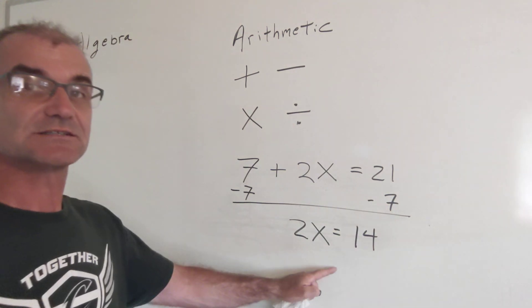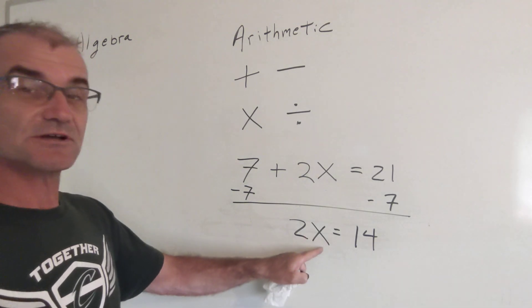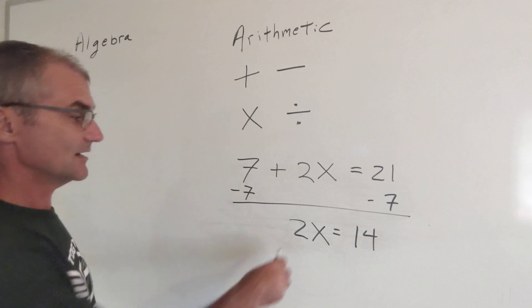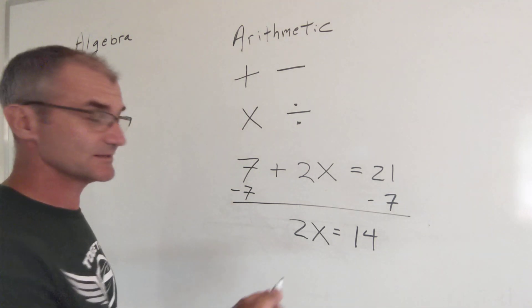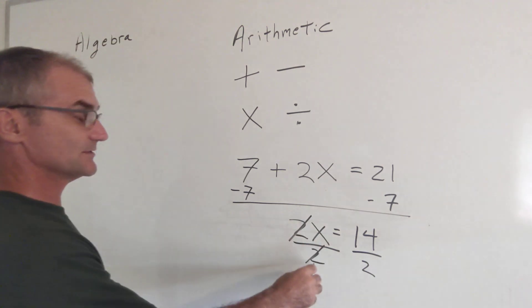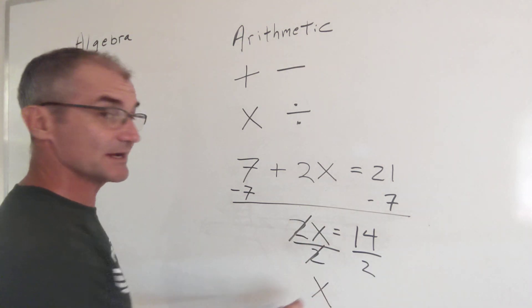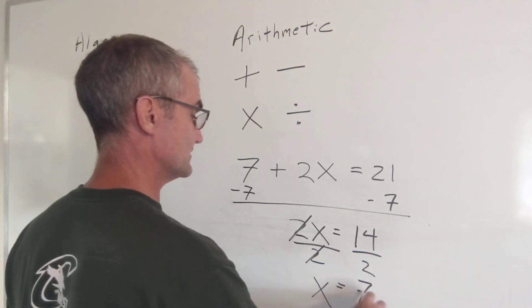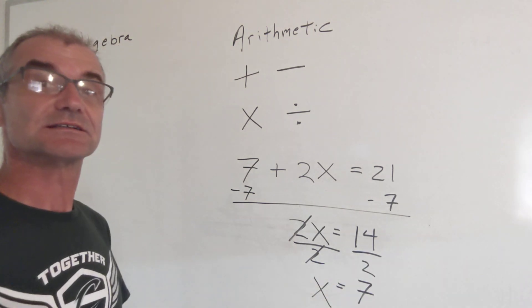So now I have 2x equals 14. Still solving for x. Trying to isolate my variable x. Get this thing by itself. I'm multiplying. The way I reverse that is division. Divide both sides by 2. These cancel. 2 divided by 2 is 1. x is now by itself. And x is equal to 14 divided by 2 or 7.